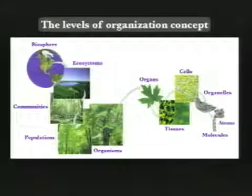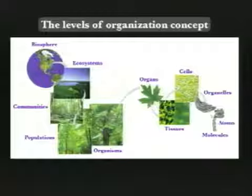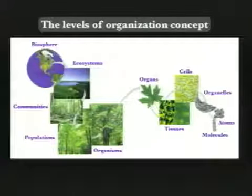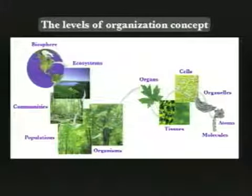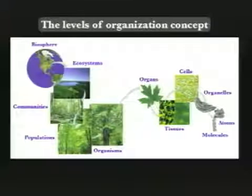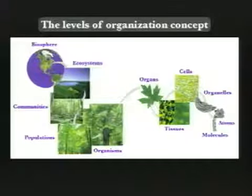At one extreme you have atoms, the building blocks of molecules, which themselves go into the composition and construction of organelles and cells that are the fundamental building blocks of organismal structure. Various cell types constructed into tissues, and tissues themselves assembled into organs and organ systems that make up an organism. With the organism as a pivot between these lower, smaller, included levels, we extend it above the organism to ecological systems, to groups of organisms and their environments.